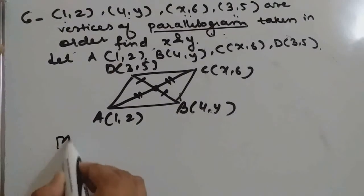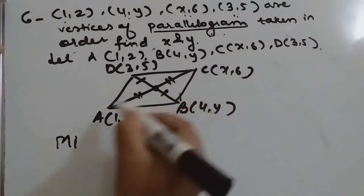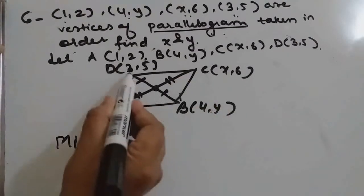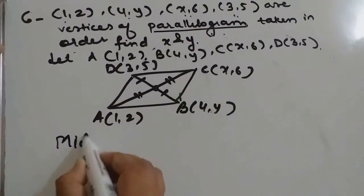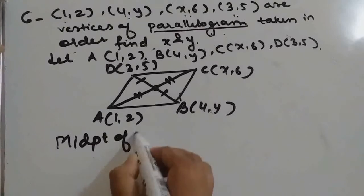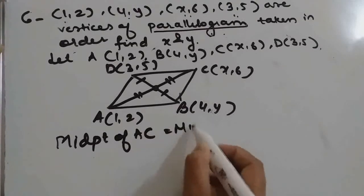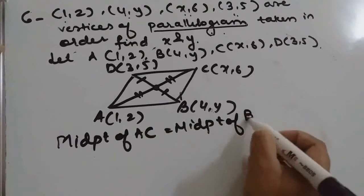So what we can do here? The midpoint of diagonal AC will be equal to the midpoint of diagonal BD. So we can write: midpoint of AC equals midpoint of BD.